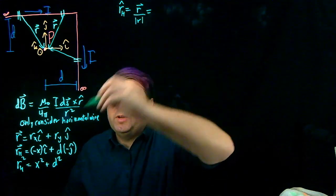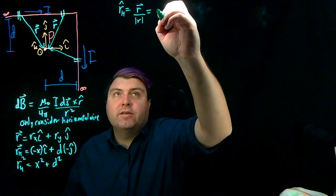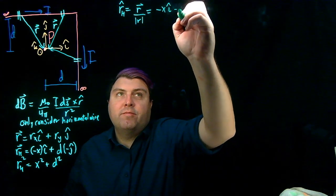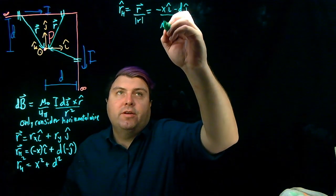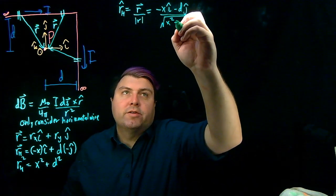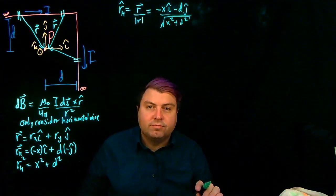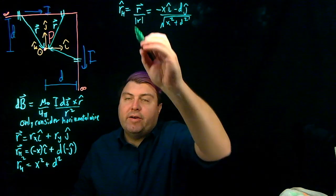So this is going to be, we just read out the r vector. So we have negative x i hat minus d j hat. And then we divide by the square root of the r squared, x squared plus d squared.